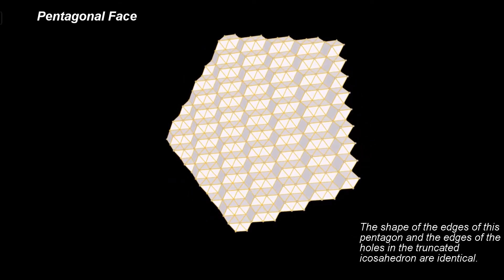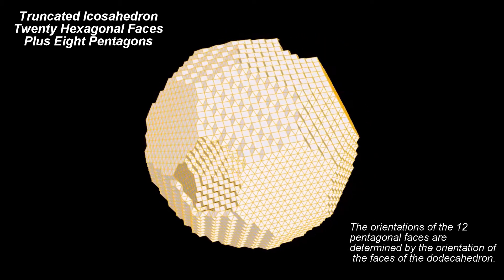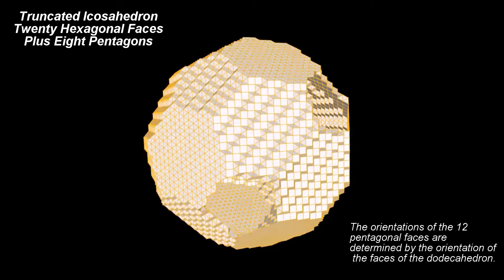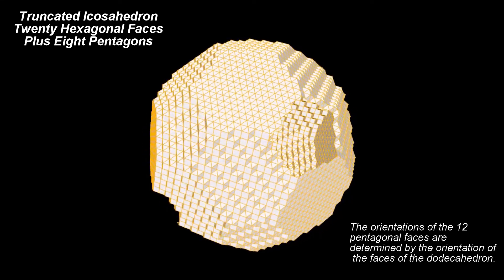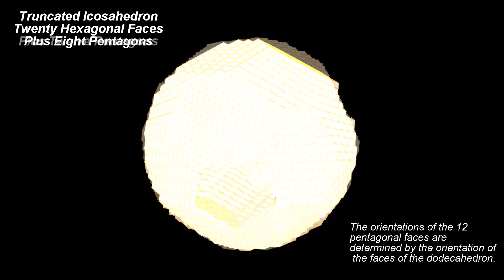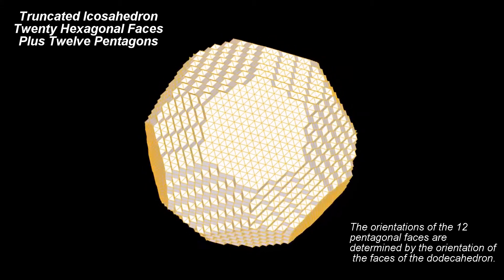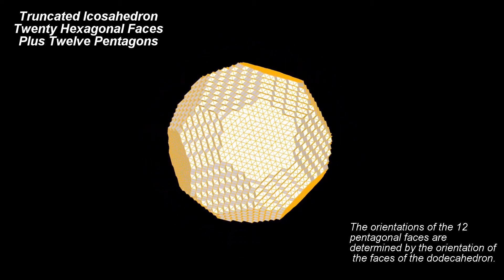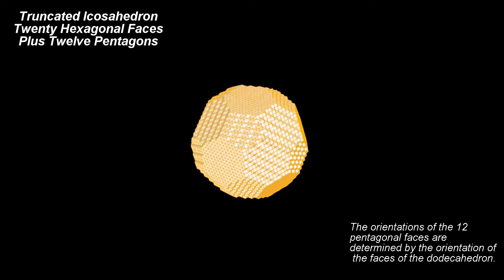Let's add 4 more faces for a total of 8 pentagons. As we can see, there are only 4 holes left. And finally, let's add the remaining 4 pentagonal faces. The complete soccer ball shape is now revealed.